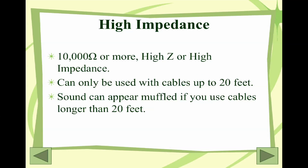High impedance is registered at 10,000 ohms or more, also called high Z. You can only use cables up to 20 feet in length — longer than that and the sound will start to appear muffled. Things like karaoke machines or children's toy microphones will have really short cables and are definitely high impedance. They're less expensive for obvious reasons.